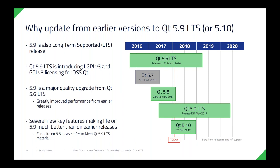Does either 5.9 or 5.10 support high dynamic range and wide color gamut APIs on Windows and macOS, or do you need to make direct OS calls? We can't say for certain on that one — we need to talk to the engineer who works on that area. Check the blog, or send that question to info@qt.io and we'll find the engineer who can give you a specific answer.